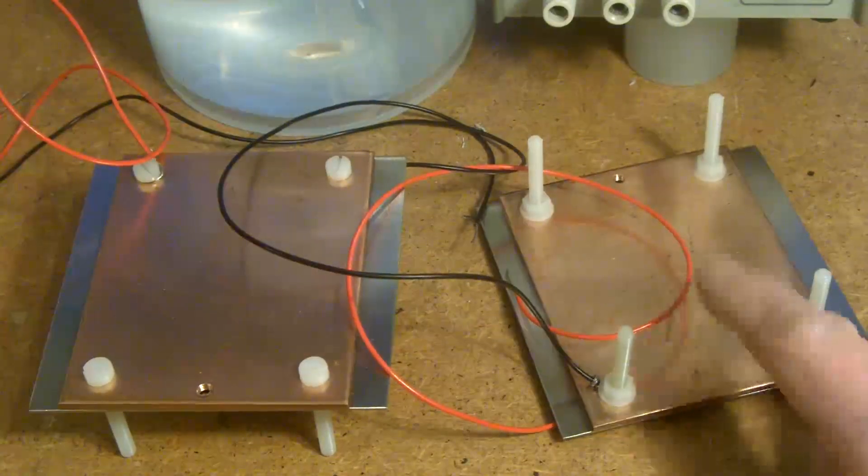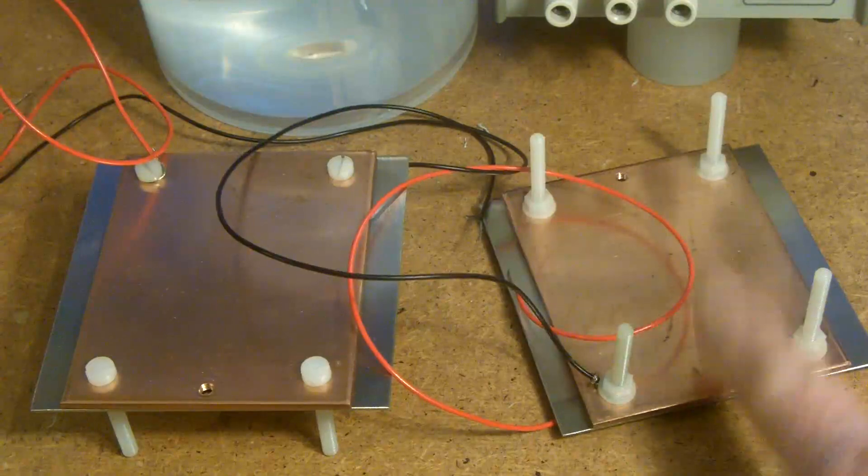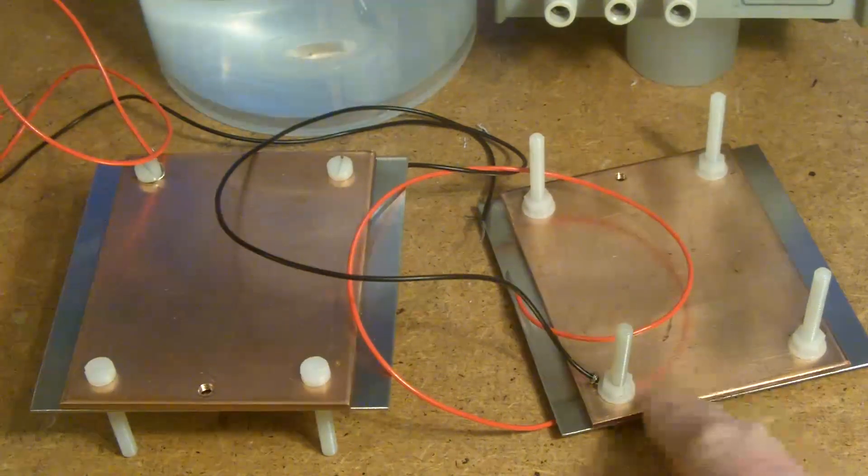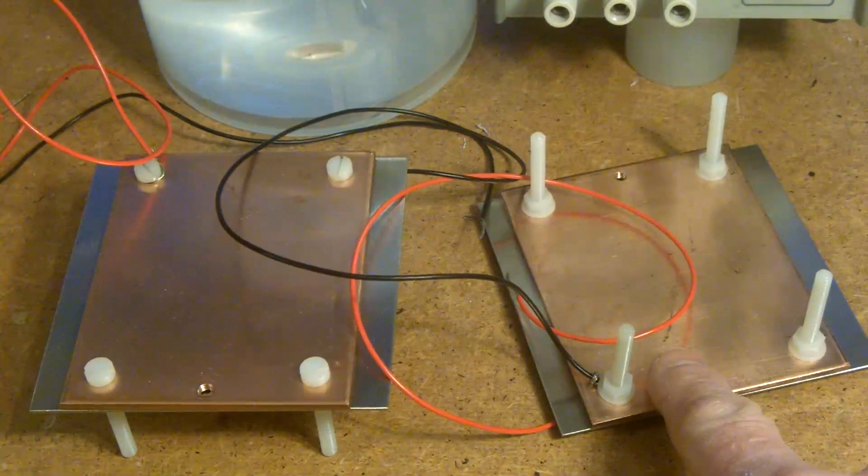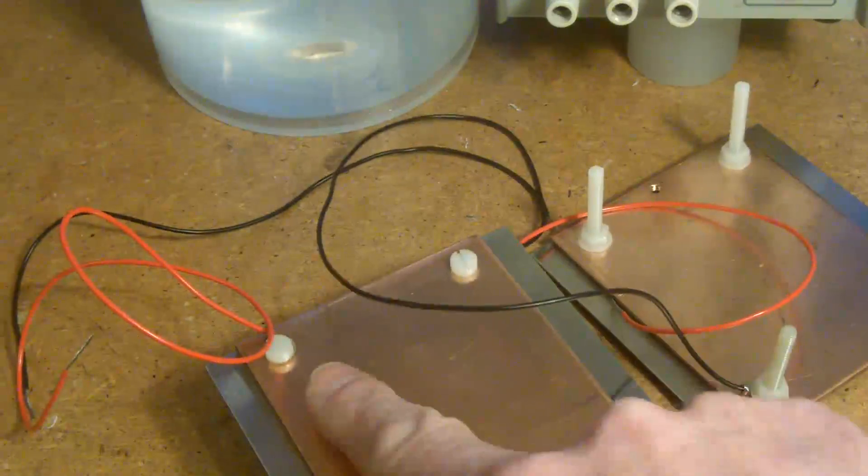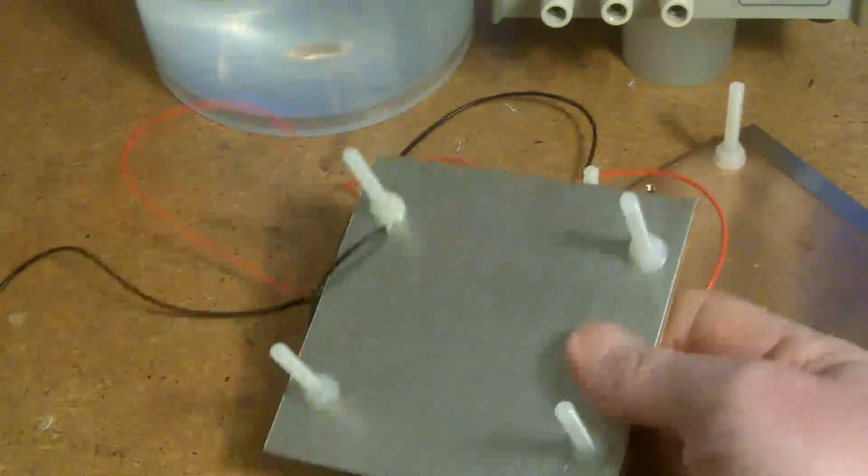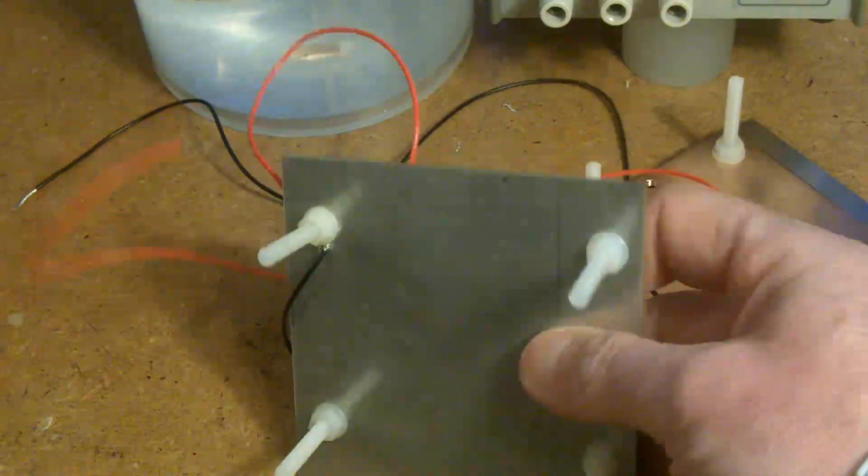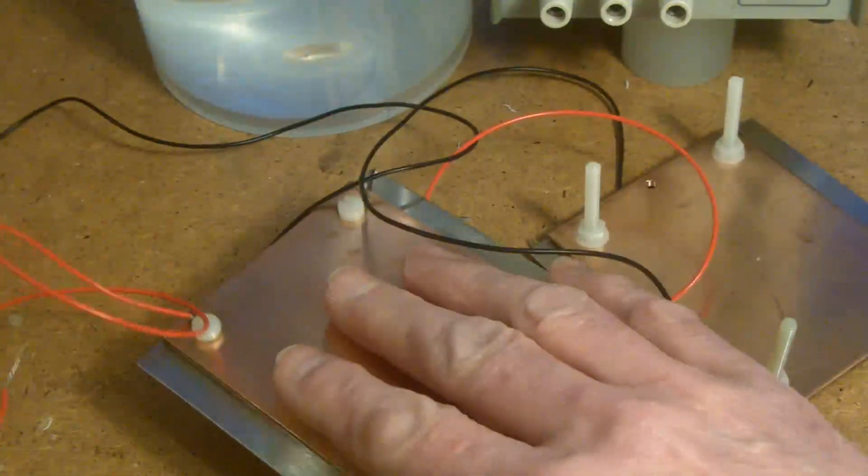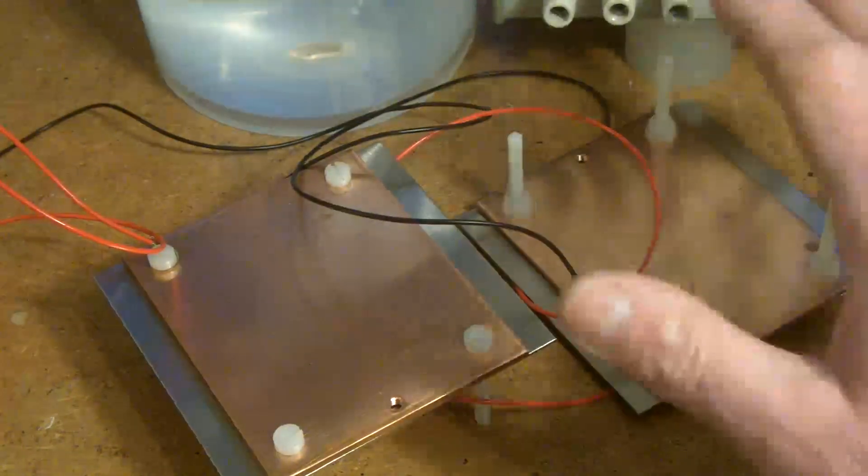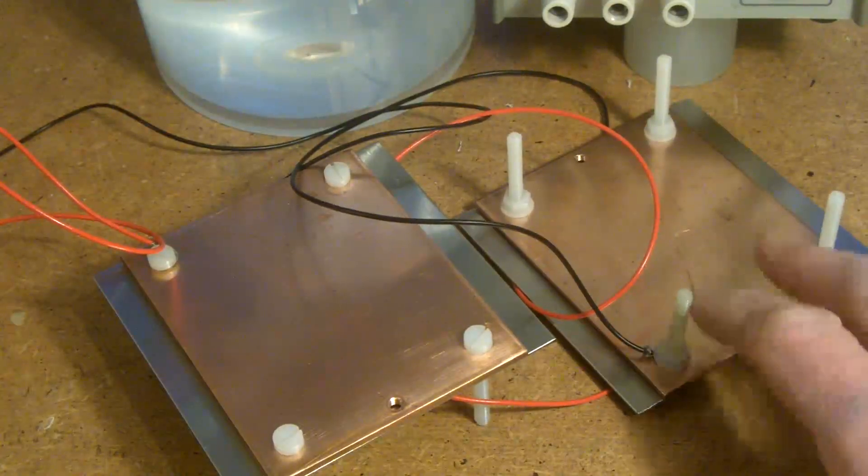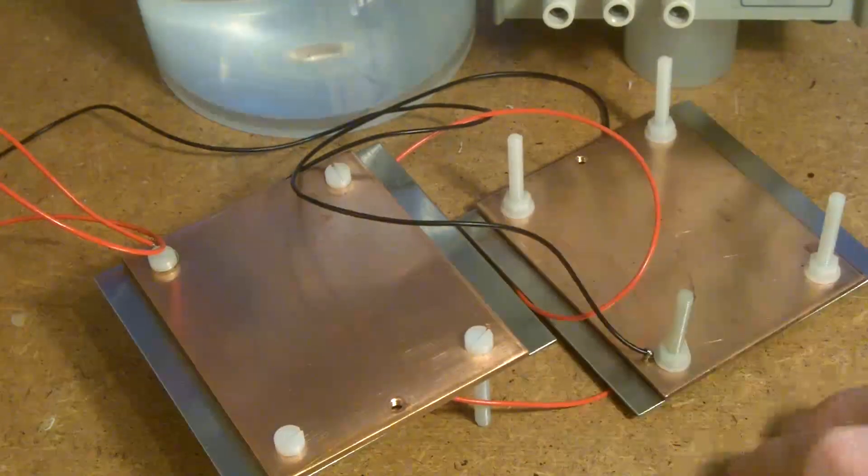I've got two little sets of plates made up. On this one I've got the positive onto the stainless steel and the negative will go onto the copper. On the other plate I've got the positive onto the copper and the negative connection will go onto the stainless steel. What I'm anticipating is that one of them will produce a satisfactory result.